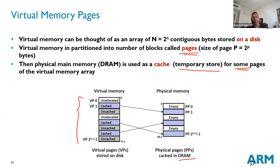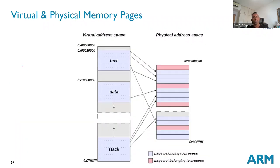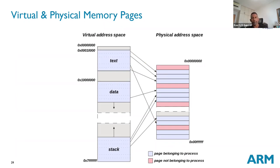For each virtual memory page we need to know whether it is: unallocated (not being used), uncached (used but not in DRAM), or cached (used and in DRAM). The virtual address space maps to the physical address space, and it doesn't have to be contiguous — virtual and physical addresses don't need to go in sequence; you can be randomly assigned to any page depending on what's available. Virtual addresses can map to either physical memory or the hard disk.